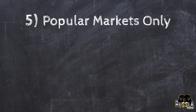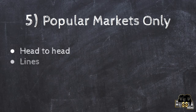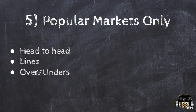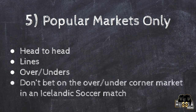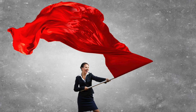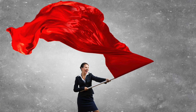Rule five: popular markets only. As you get into match betting you'll see there are many other markets — double chance, over and under corners, player points in football and NBA — which are fine for non-promo bets. But stick to popular sports and popular markets within those sports. Don't bet on over and under corners in an Icelandic soccer match — no one's betting on that, and if you find an arbitrage opportunity there, it's an obvious flag for your account and you'll get restricted fast.